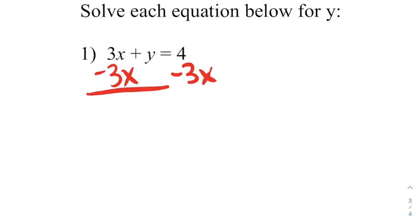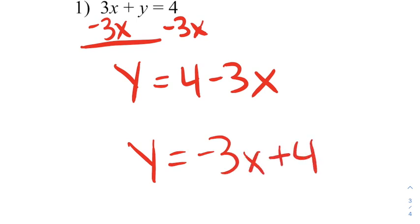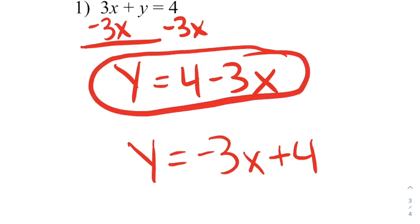I do that to both sides, and I'm going to get y equals 4 minus 3x. It would also be acceptable to say that y equals negative 3x plus 4. Either one of these is acceptable. I think most of you right now are probably going to answer it this way, and that's totally fine, but later on we're going to learn how to give the answer this way typically.